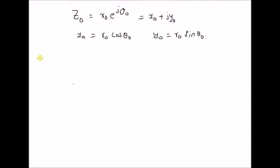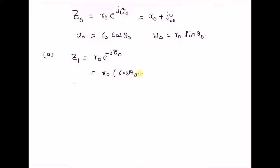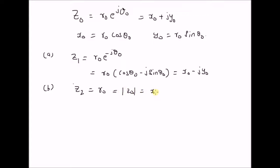Using these relations, let us look at basic transformations of the complex number z naught. The first one is a conjugate: z1 is equal to r naught into e power minus j theta naught. Since we replace theta naught with minus theta naught, this is equal to r naught multiplied by cos theta naught minus j sin theta naught, by using Euler's formula. So this is equal to x naught minus j y naught. Next, z2 is equal to r naught, which is basically equal to the absolute value of z naught, which can also be written as x naught square plus y naught square to the power of one half.